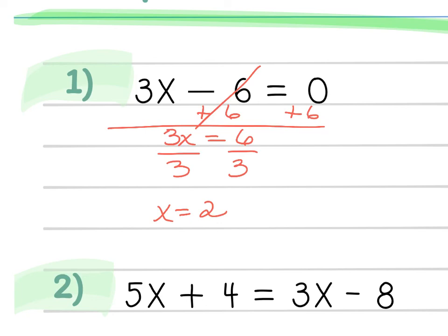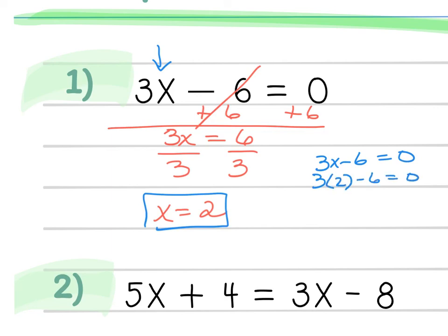Remember, whenever you're solving for a variable, you can check your answer by plugging the value of x back into the original. If I rewrite the original and replace x with 2: 3 times 2 is 6, and 6 minus 6 is 0. I got the correct answer because it checks out. If you don't get a true statement when you plug it in, you know you did something wrong and need to rework the problem.